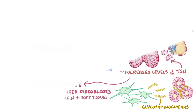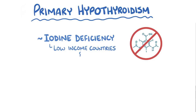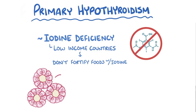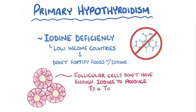Iodine deficiency is the most common cause of primary hypothyroidism in low-income countries that don't fortify their food with iodine, because the follicular cells don't have the iodine they need to produce T3 and T4.